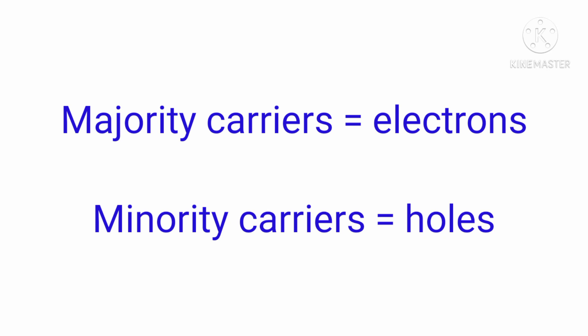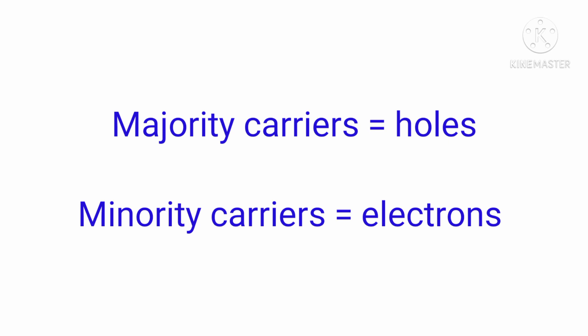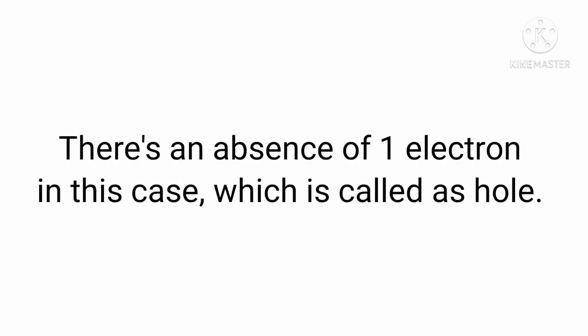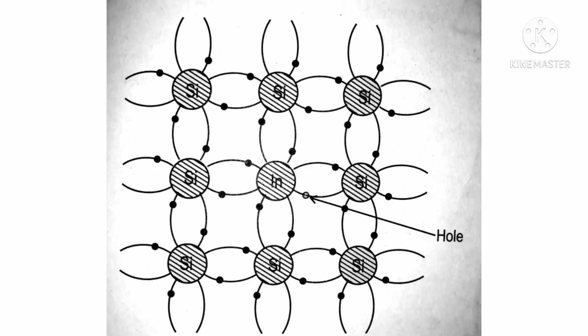In a p-type semiconductor, the majority charge carriers are holes and the minority charge carriers are electrons. A trivalent impurity is added to the silicon crystal. The trivalent atom has three electrons in its valence orbit and shares them with three neighboring silicon atoms to form covalent bonds, but there is an absence of one electron — this vacancy is called a hole. The impurity has a tendency to accept an electron, so it is called an acceptor impurity. The holes move and contribute to current, and since conductivity is due to positively charged holes, it is called p-type.